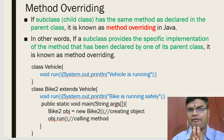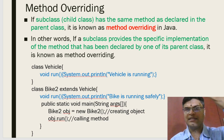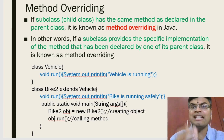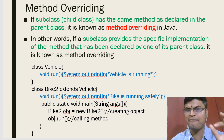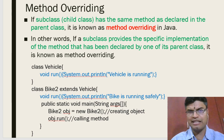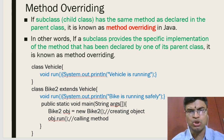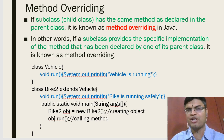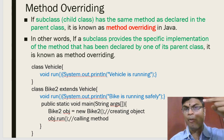Whenever you talk about method overriding, you should have an 'is-a' relationship — a parent and child class relationship. If both classes have the same method name with the same parameters, that concept is called method overriding. In the example on screen, there are two classes called Vehicle and Bike2. Vehicle's run method prints 'vehicle is running' and Bike2's run method prints 'bike is running safely'.